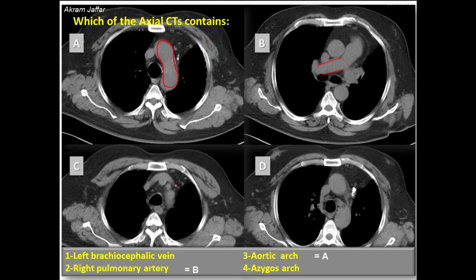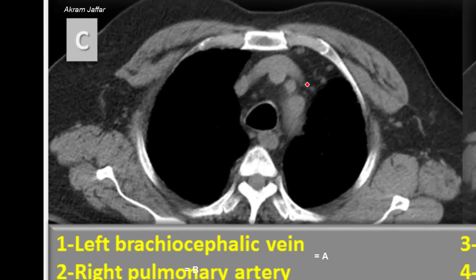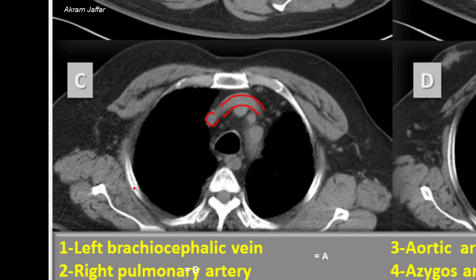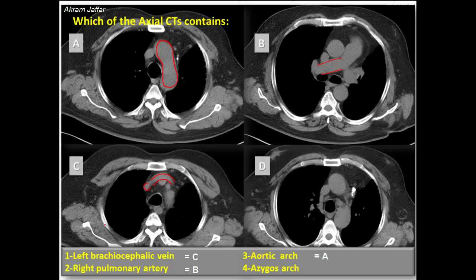In C, this is at a higher level than the previous two levels, and we can see here the three branches from the arch of the aorta, spiraling around the trachea. In front of these arteries are the veins, and so we have on the left side the left brachiocephalic vein. It crosses from left to right side across the midline to join the right brachiocephalic vein, and then they will form the superior vena cava. So the left brachiocephalic vein matches with C.